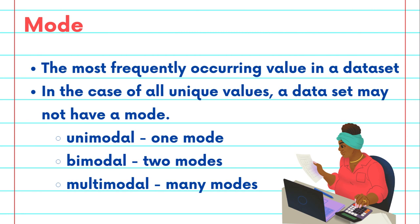The third measure of central tendency is the mode, which is the most frequently occurring value in the dataset. A dataset may not have a mode in the case of all unique values. It can be unimodal, bimodal, or multimodal depending on the number of highest occurring values in the dataset.